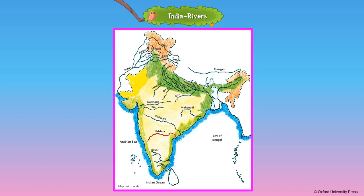The Krishna starts from the Western Ghats and flows through Maharashtra, Karnataka, Telangana, and Andhra Pradesh. The Kaveri starts from Talakaveri in the Kodagu district of Karnataka and flows through Karnataka and Tamil Nadu.